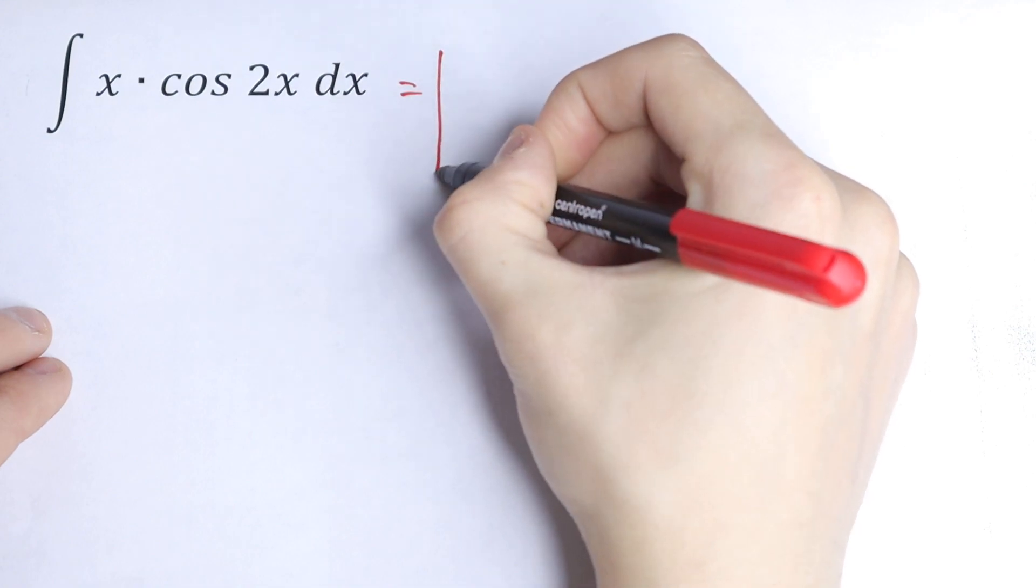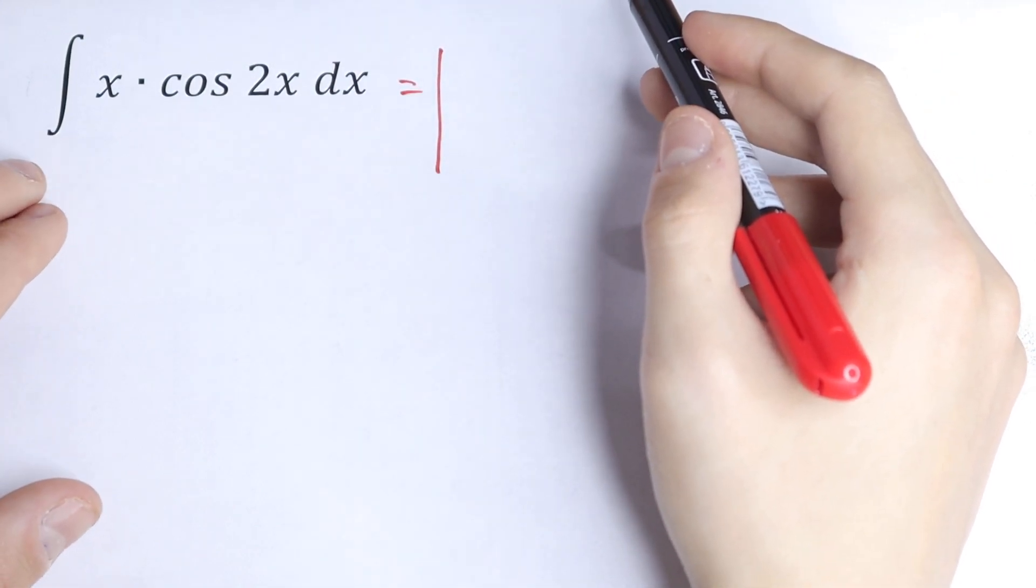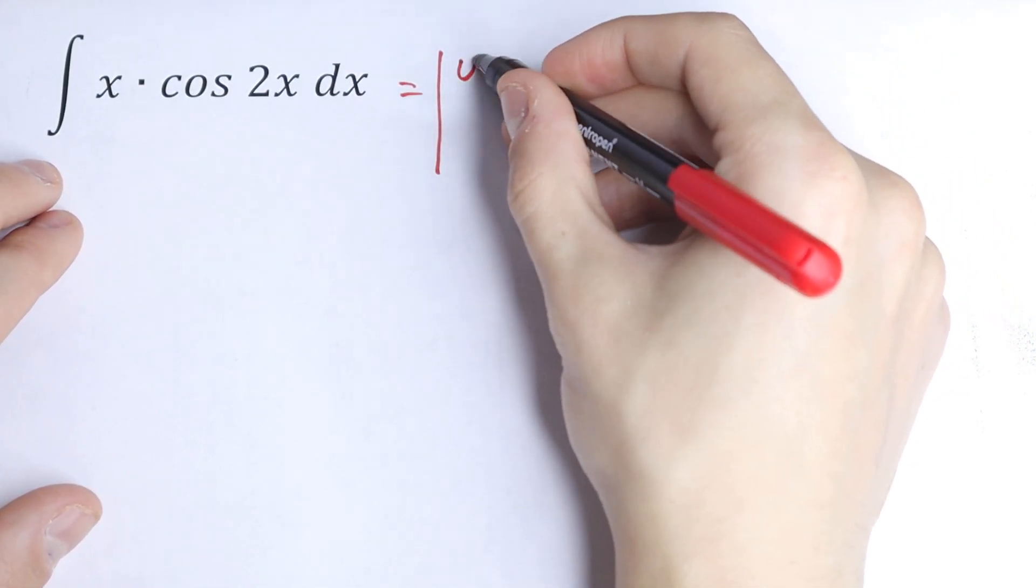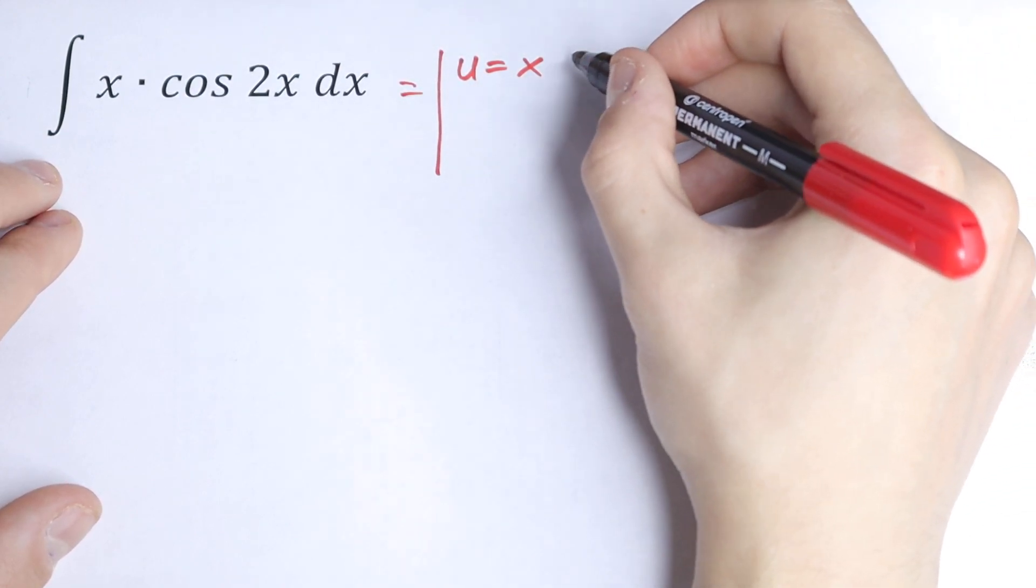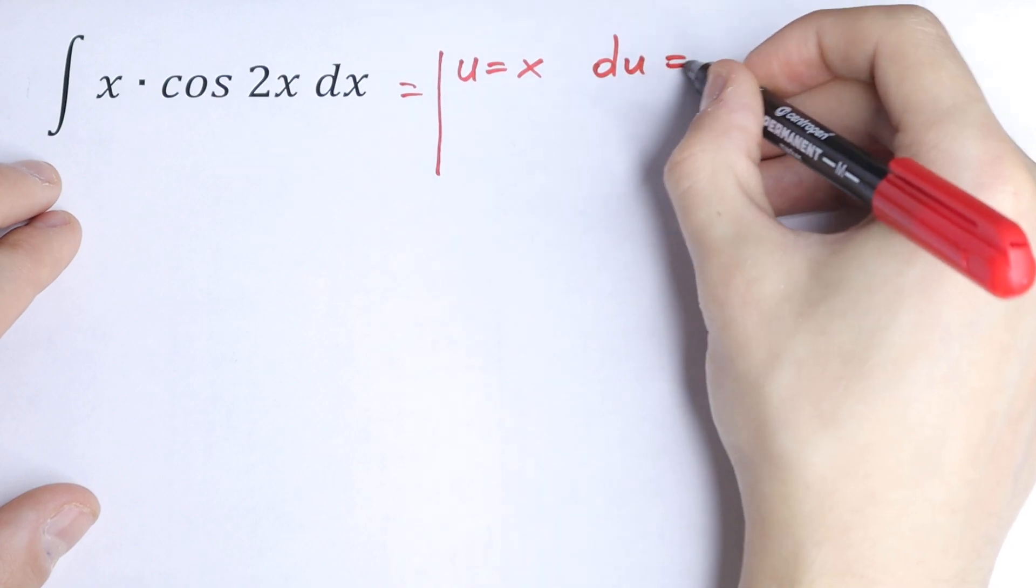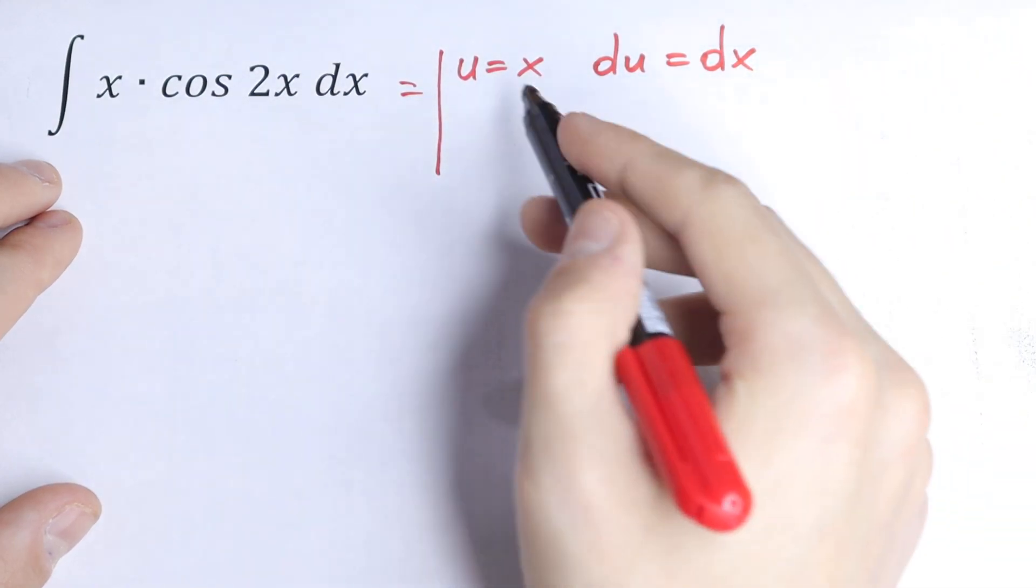We all know that we can integrate this integral by parts. So let's set u equal to x, then du will be equal to dx. Just find the derivative right here.